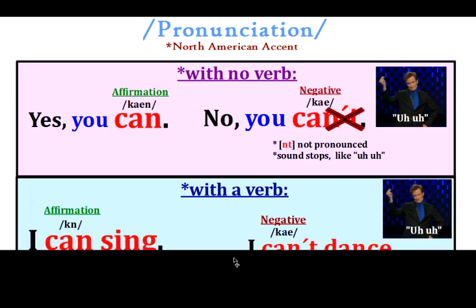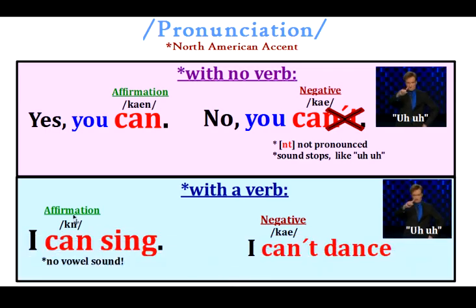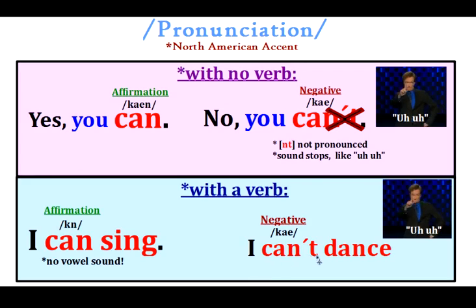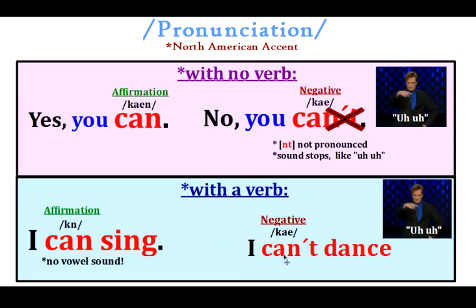With a verb, the affirmation changes. In the affirmative with a verb — for example, I can sing — the sound has no vowel sound: can. I can sing. The negative is the same as before: I can't dance. Can't. The affirmation is very, very short with no vowel sound: can. I can sing. The negative: I can't dance.